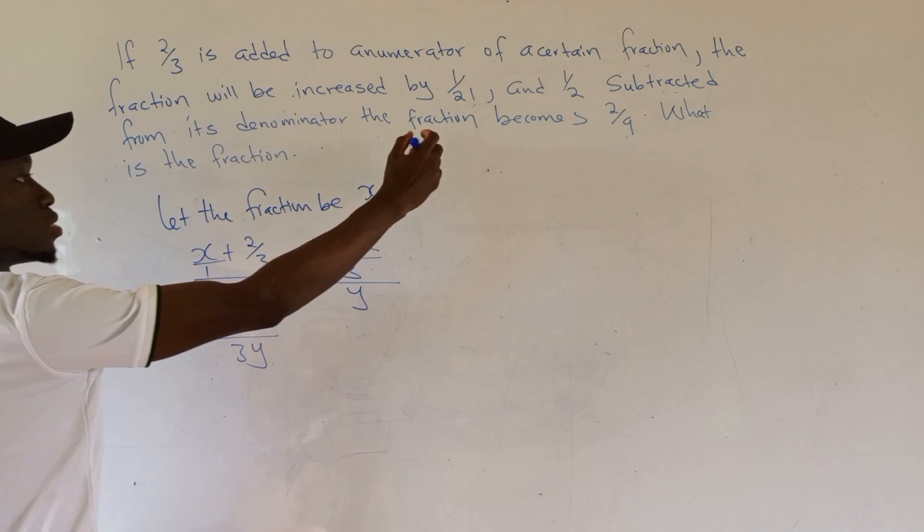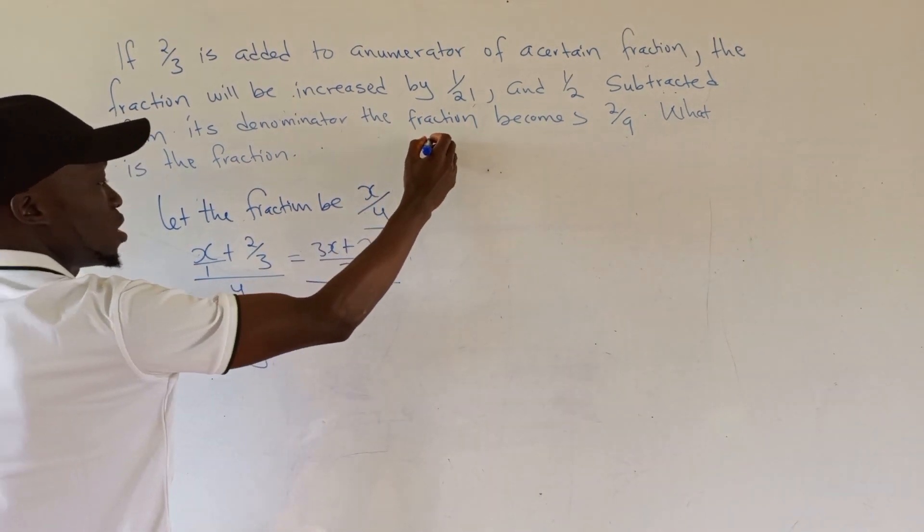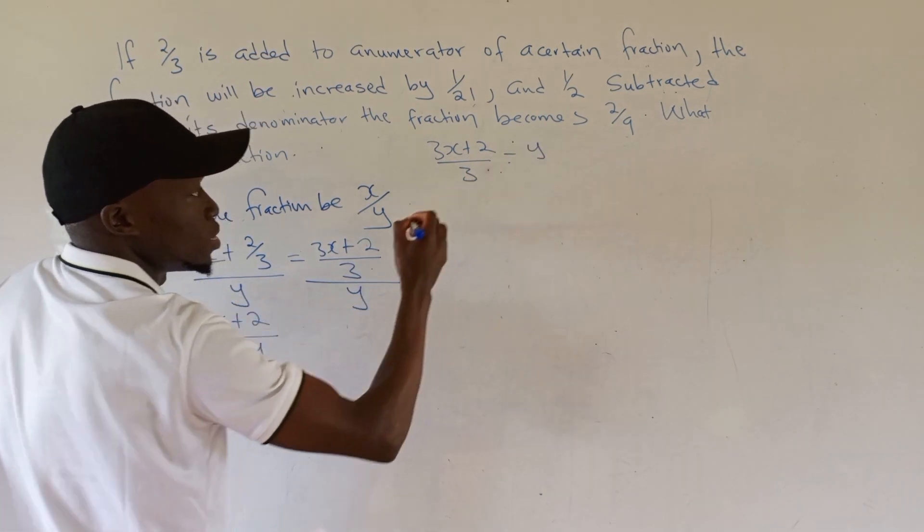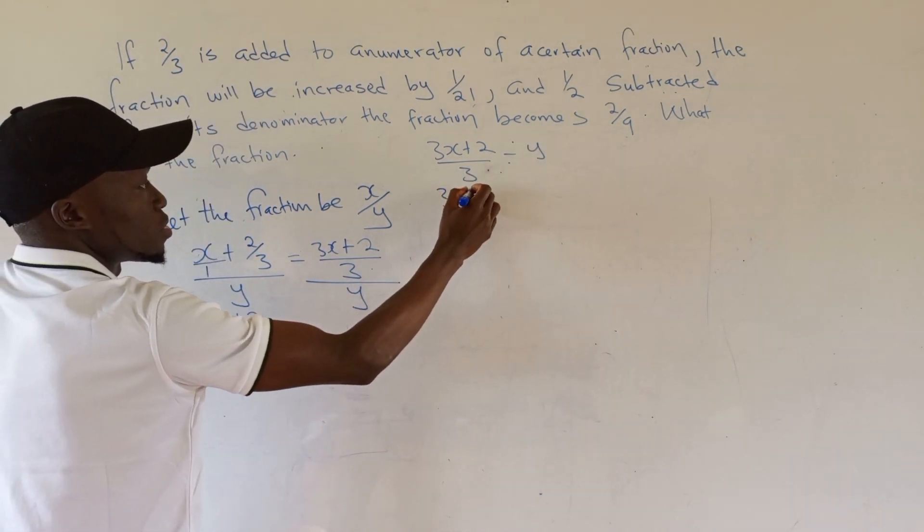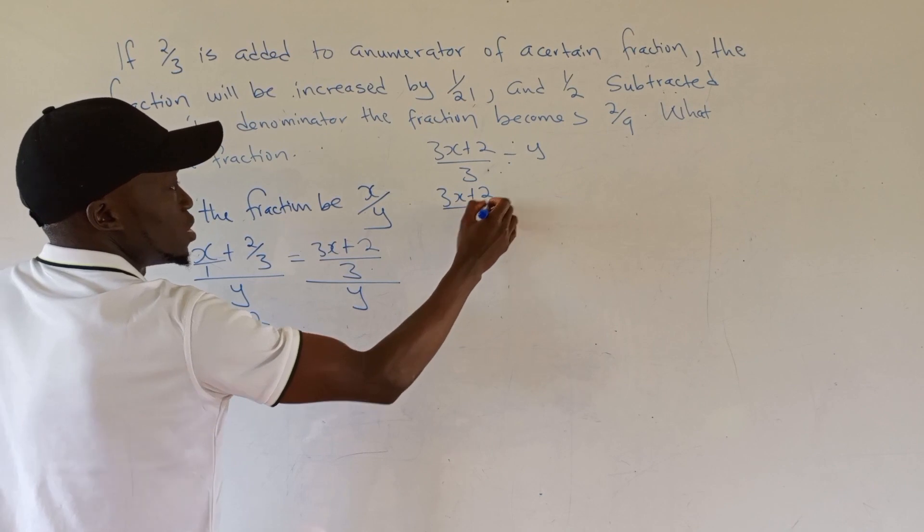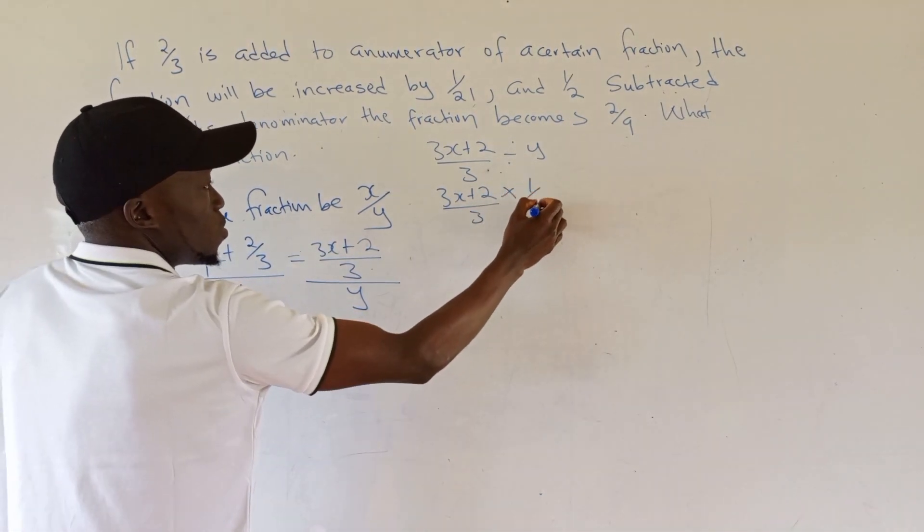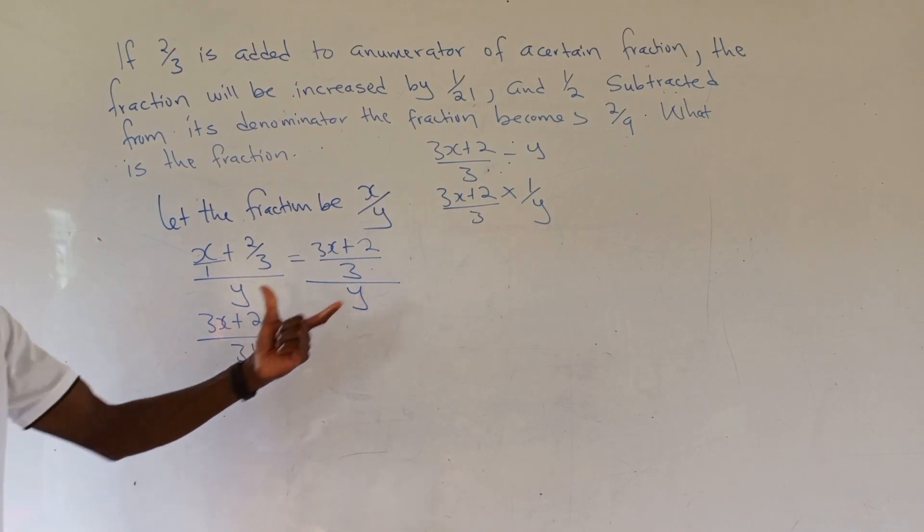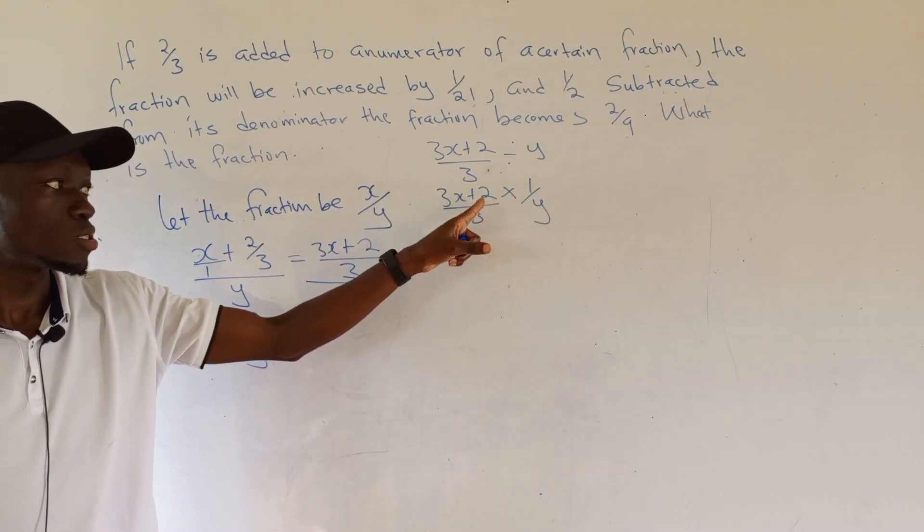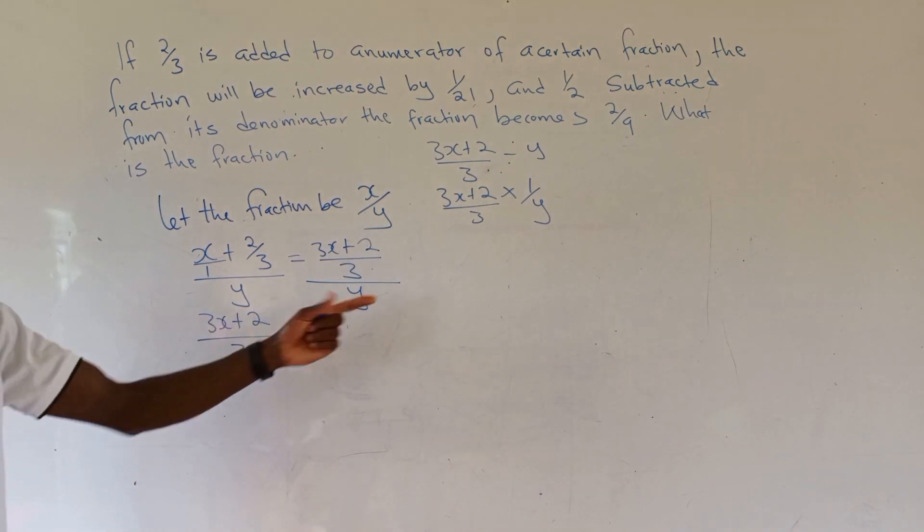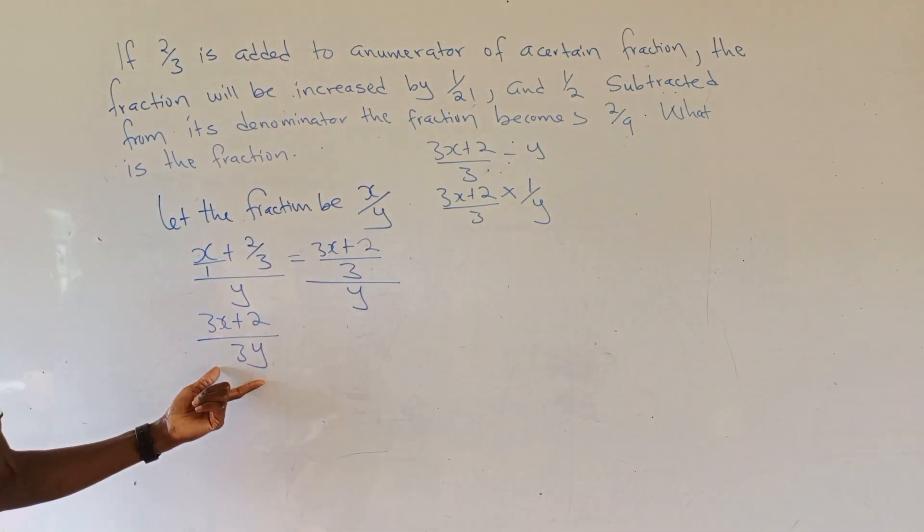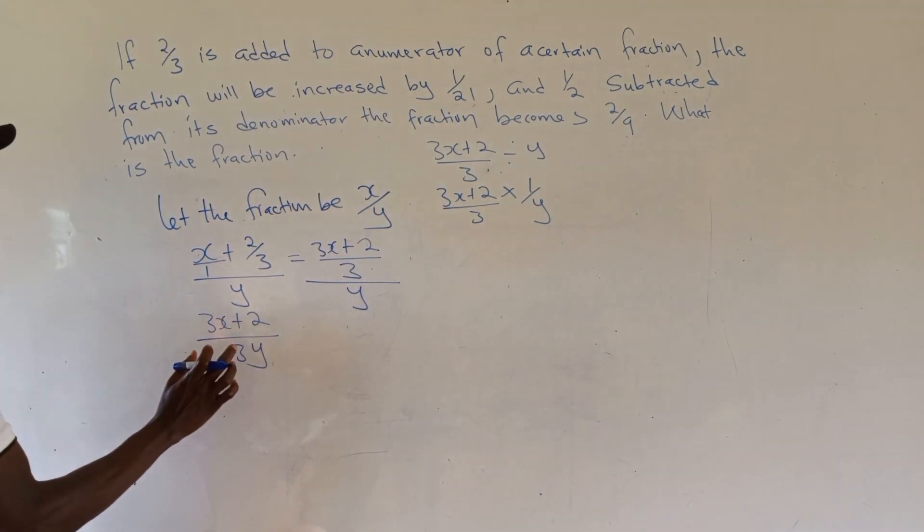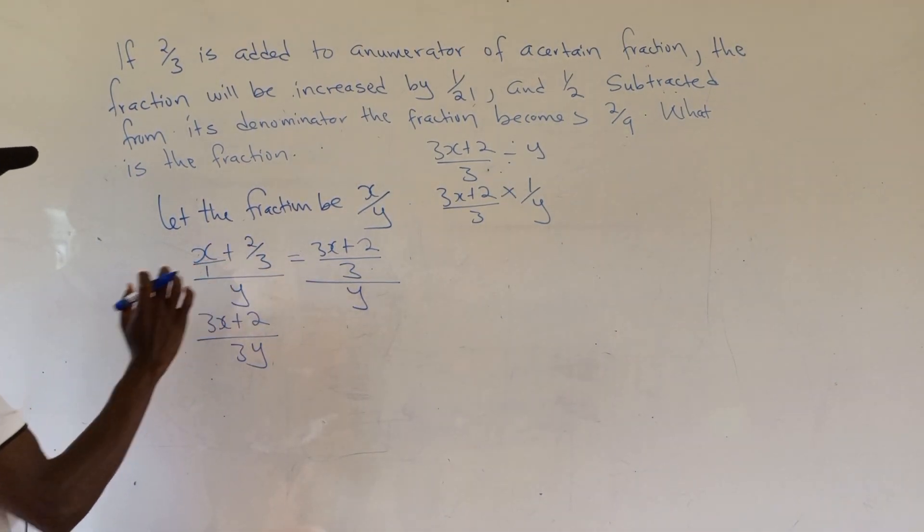This can be written as (3x + 2)/(3y). How? If you have (3x + 2)/3 divided by y, that's the same as (3x + 2)/3 times 1/y. When you simplify, 3x + 2 multiplied by 1 is 3x + 2, and 3 multiplied by y is 3y.